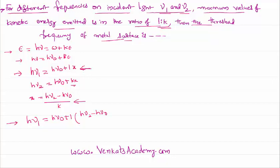Let us simplify this equation to get the required answer. h*nu1 is equal to h*nu0 plus h*nu2 by k minus h*nu0 by k. Let us get that nu2 term to the other side. So h*nu1 minus h*nu2 by k equal to h*nu0.